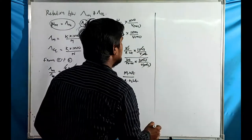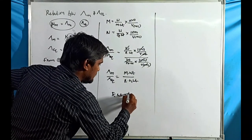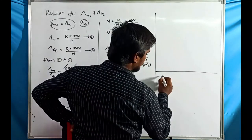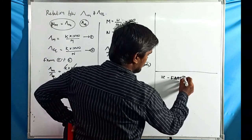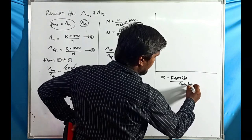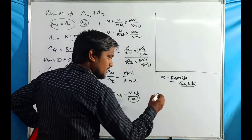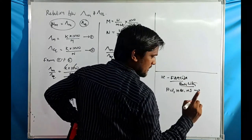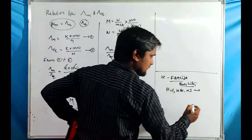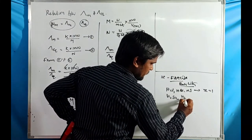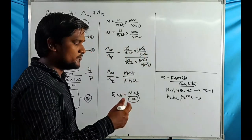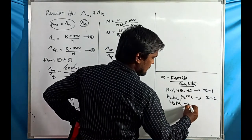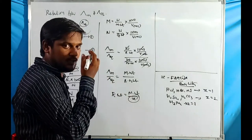We know that equivalent weight equals molecular weight divided by z-factor. For acids, the z value is the basicity — the number of H⁺ ions released. For HCl, HBr, HI: z = 1. For H₂SO₄ and H₂CO₃: z = 2. For H₃PO₄: z = 3.